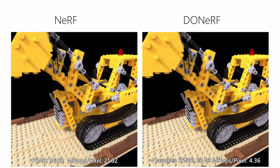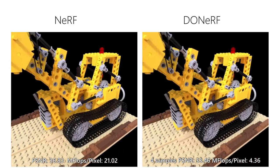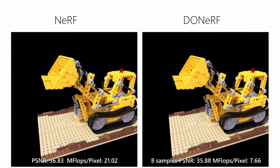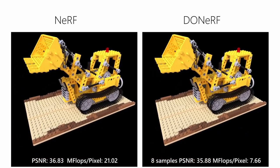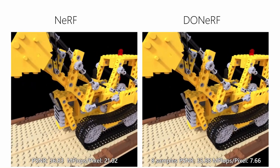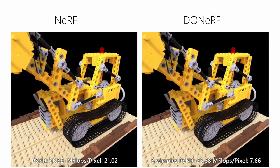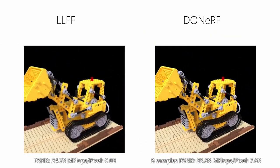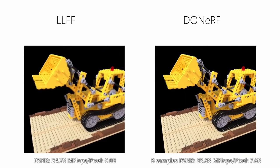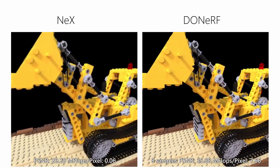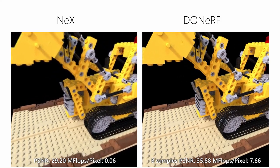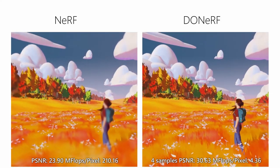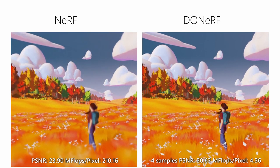In the following sequences, we show videos of DoNerf compared to the baselines of NeRF, Local Light Field Fusion, and NEX. On average, DoNerf achieves quality equal or better compared to NeRF with as few as four samples per pixel. Compared to NeRF, NEX, and Local Light Field Fusion, DoNerf is able to handle large-scale scenes such as forest much better due to only requiring samples where they contribute the most.